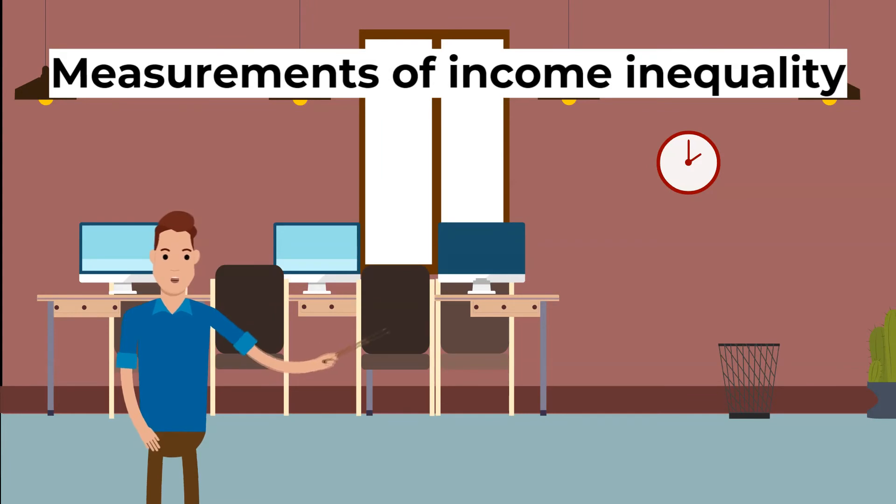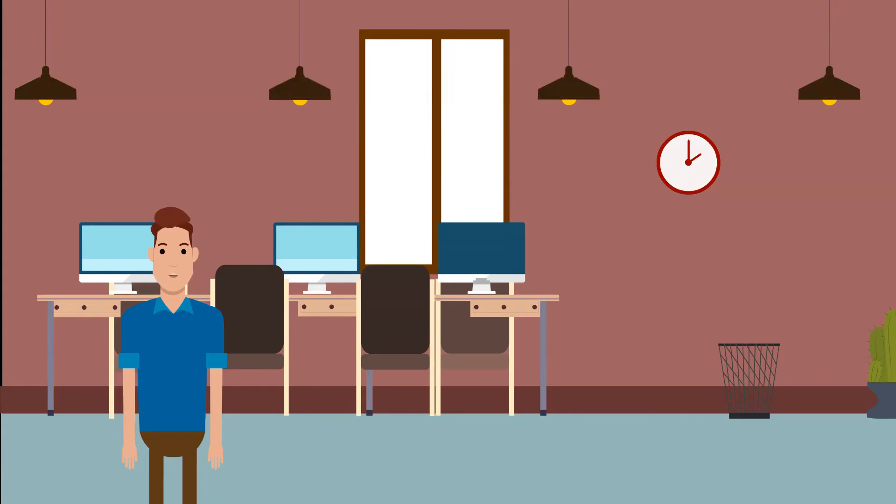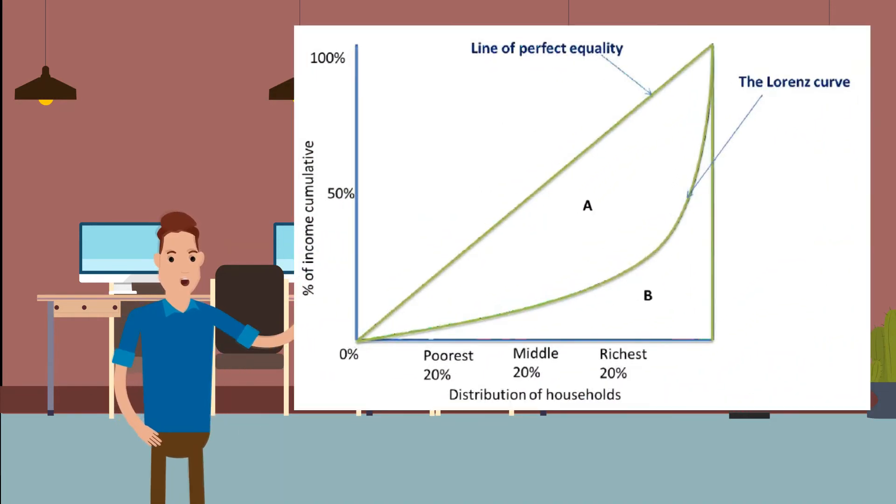Okay, let's now look at measurements of income inequality. Information on the distribution of income and wealth tends to be presented in percentiles, deciles, and quintiles. Firstly, the Lorenz curve.